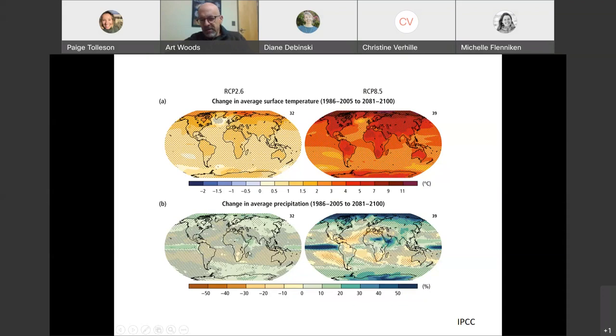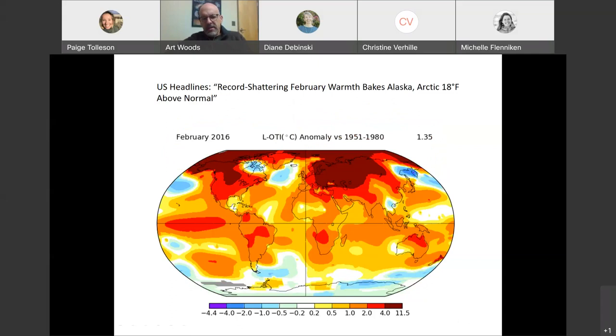We also expect big changes in patterns of cloud cover and patterns of precipitation. I'm not really going to talk about those in this talk, but I personally think that those are also going to be vastly important for the ecology of different ecosystems. That slide was about long-term means in different places, but we know that climate change is also driving a higher frequency of extremes. We just got in the news in the last few days reports of extremely high temperatures in both the South Pole and areas of the Arctic. Here's another example from a few years ago in 2016, February warmth baking Alaska, the Arctic was 18 degrees Fahrenheit above normal.